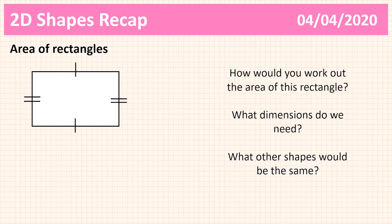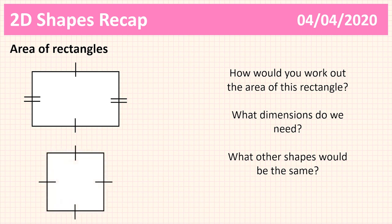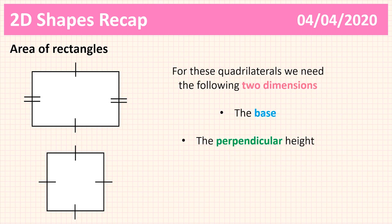Here we have a rectangle. I'm going to give you a chance to think: what dimensions do we need to work out the area, and what other shapes would be similar? For shapes similar to a rectangle, a square uses the same method. The two dimensions you need are the base and the perpendicular height. With squares and rectangles we are very lucky — the lines are perpendicular to each other, so it's very easy to find both. Very straightforward.